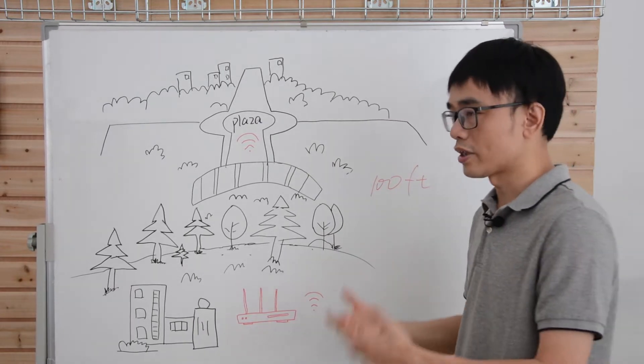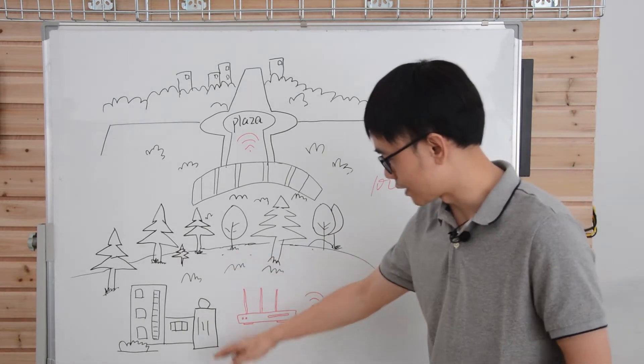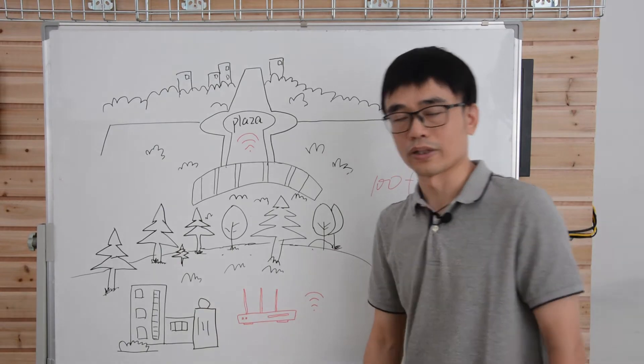But the problem is the outdoor access point only accepts PoE, but we cannot wire the internet cable from the hotel to the Plaza, right? So, now let's see what solution we come up with.